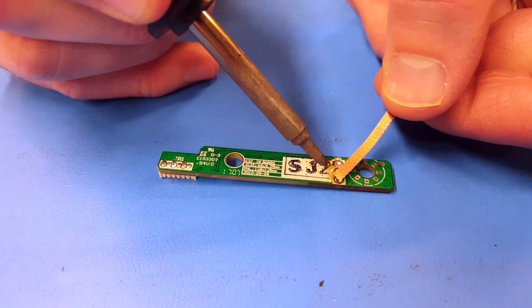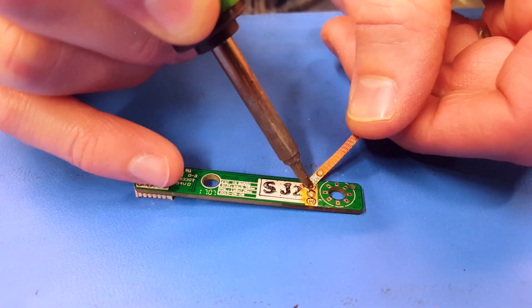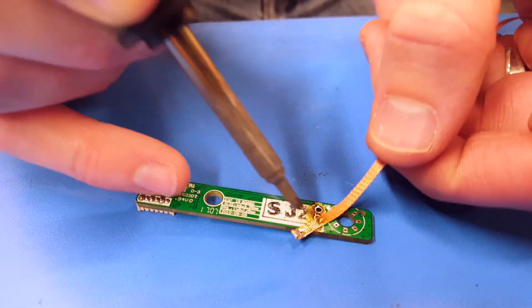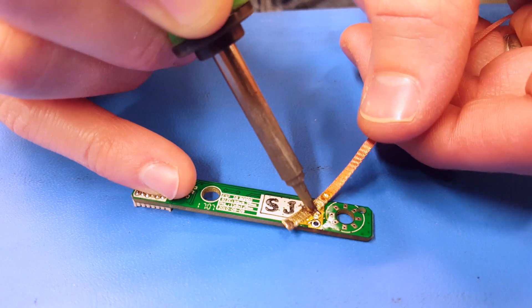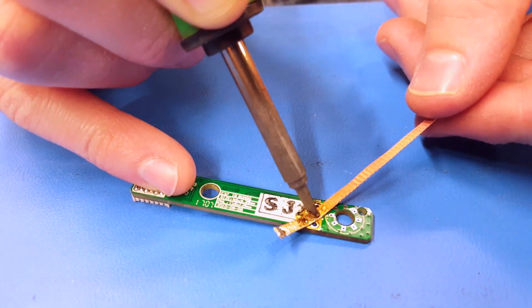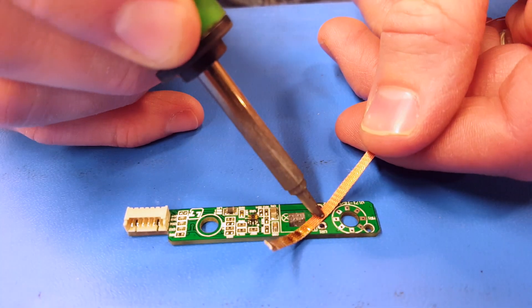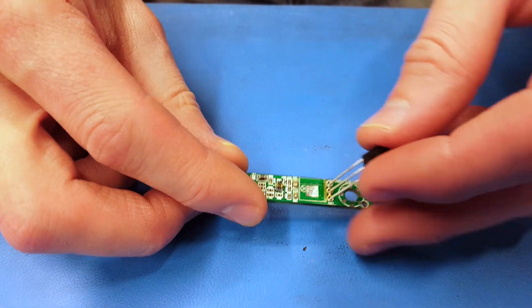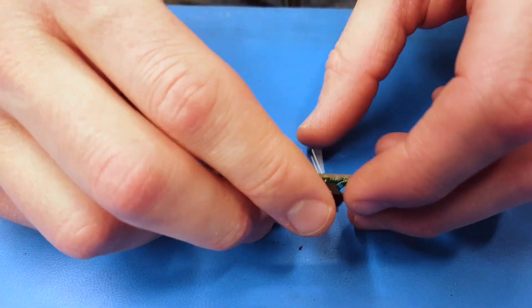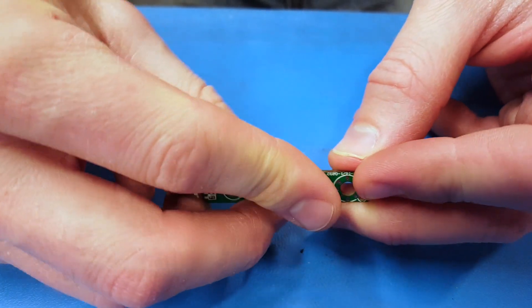Use the iron and solder wick to clean the remaining solder off of the pads. Insert the IC legs through the holes on the board. Line up the IC and bend it at the appropriate spot.